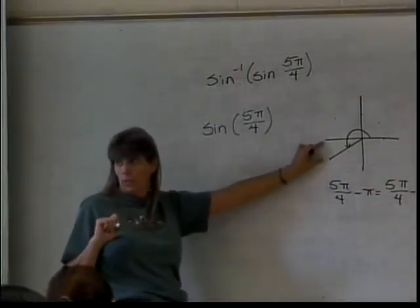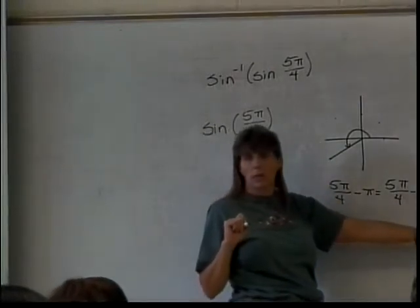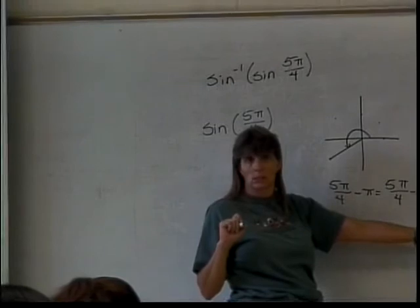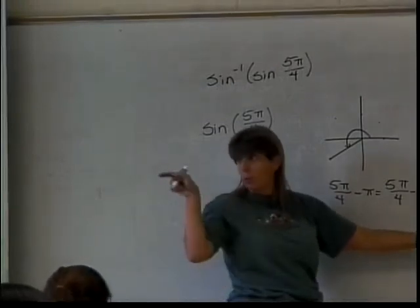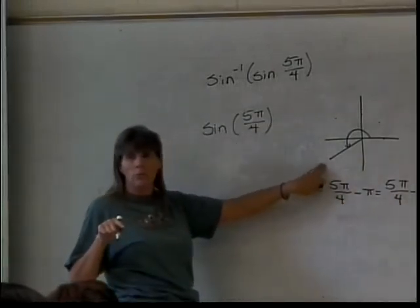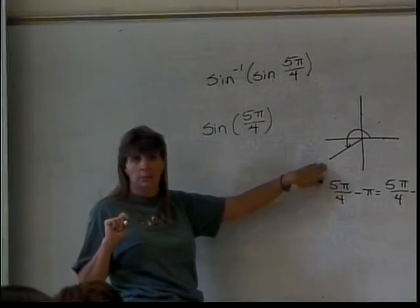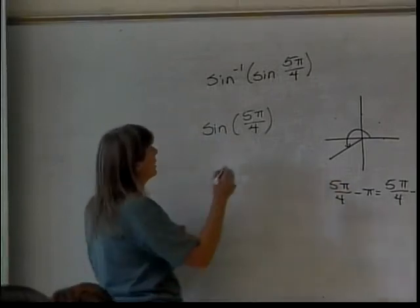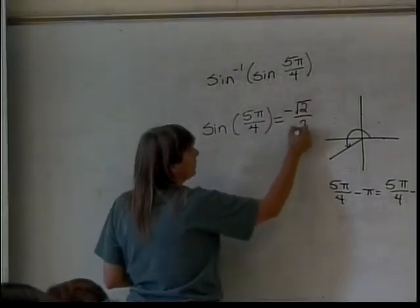So we've got the reference angle. What is the sine of pi over 4, S-I-N sine? Square root of 2 over 2, that's one you're supposed to just know. But then when I move it so that it's in quadrant 3, what happens to the S-I-G-N sign of that number? It becomes negative. So this becomes negative square root of 2 over 2.